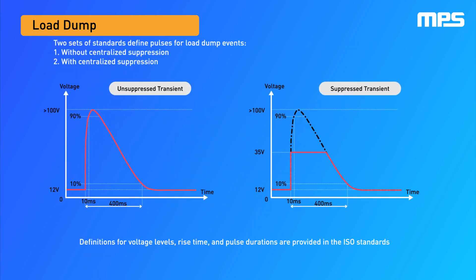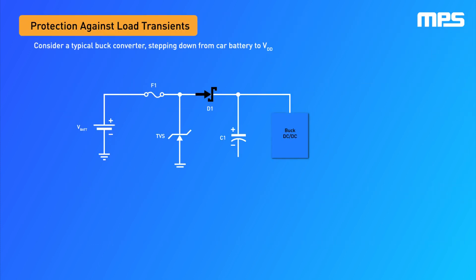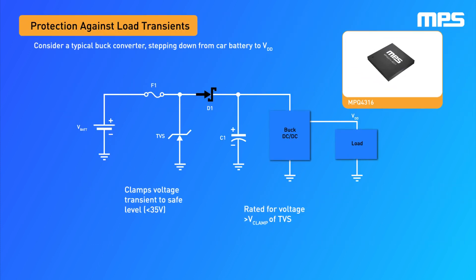Unsuppressed transients occur when the alternator has no internal clamping or means of suppression, while suppressed transients are suppressed by avalanche diodes in the alternator's rectifier. Clamping protection in the alternator suppresses the transient to a lower voltage in most 12-volt systems. A wide input voltage buck converter, such as the MPQ4316, can offer protection against suppressed load dumps.